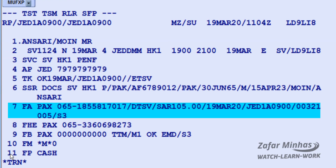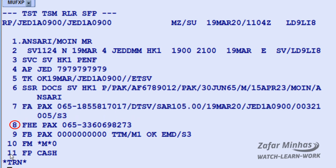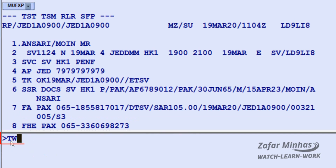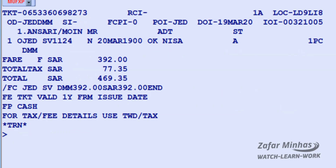The issued EMD appears on line number 7 of the PNR. To revalidate the e-ticket, first display the original issued document from line number 8 of PNR. Use TWD transaction slash L line indicator plus 8, FHE element of PNR. The original issue ticket is now displayed.